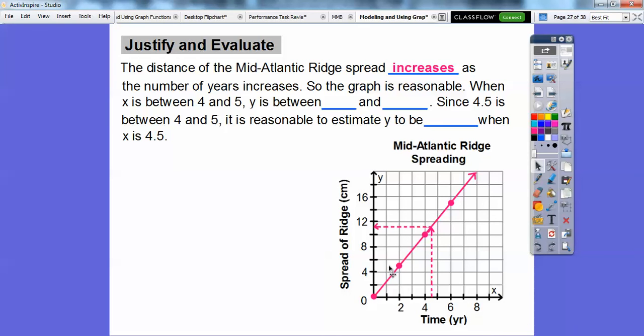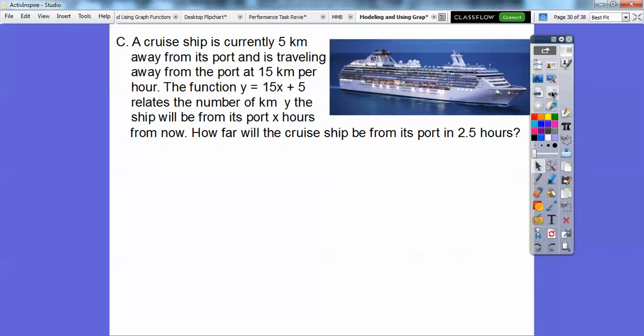So when x is between 4 and 5 right here, so if we go up right here, y is between, looks like between, I don't know, 10 and 12. So 10 or 12.5. If you said 10 and 12, that's okay right there. And since 4.5 is between 4 and 5, it's reasonable to estimate the y to be that 11.25. Or if you said 11.5 or even just 11, I'm sure your teachers would be okay.